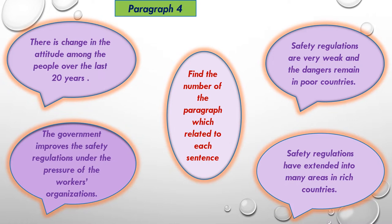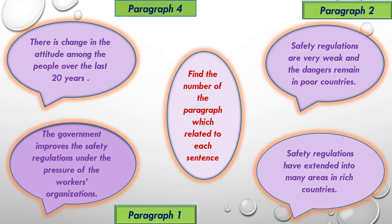Number 2: Safety regulations are very weak and the dangers remain in poor countries. This is paragraph 2. Number 3: The government improves the safety regulations under the pressure of the workers' organizations. This is paragraph 1. Number 4: Safety regulations have extended into many areas in rich countries. This is paragraph 3.